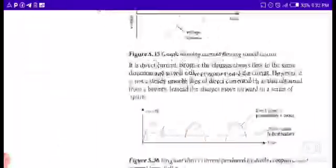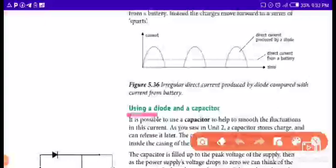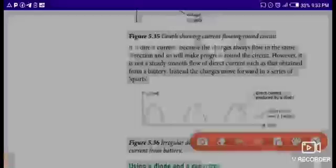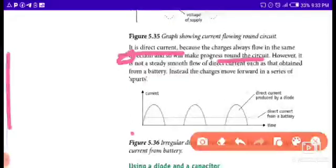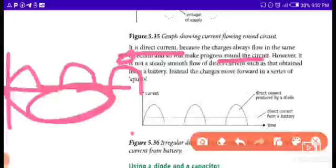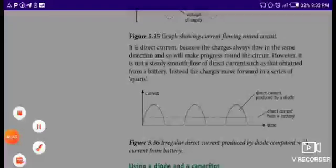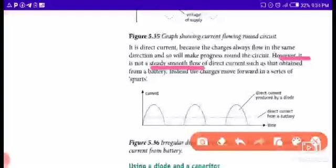Using a diode and capacitor. Using a diode and capacitor. It is a direct current because the charges flow in the same direction and so we make progress around the circuit. However, it is not as steady as most direct current such as that obtained from battery.